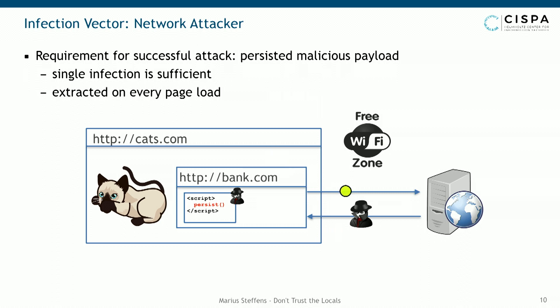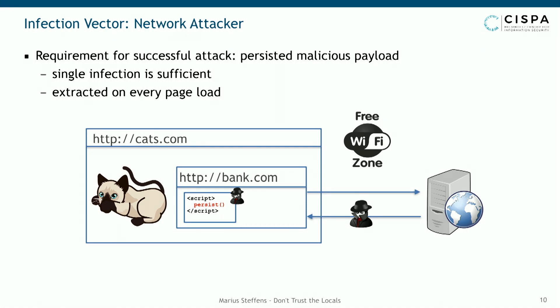The network attacker sits somewhere between the user and the web server, intercepting and injecting payloads into HTTP traffic. Think about visiting an HTTP site — for example a captive portal — an attacker can inject an iframe pointing to the application they want to attack, such as hdbbank.com. Since it points to an HTTP resource, they can also intercept that request, gaining the capability to execute a script payload within bank.com — setting cookies valid for the HTTPS version, or injecting values into the storage of the HTTP origin of bank.com.